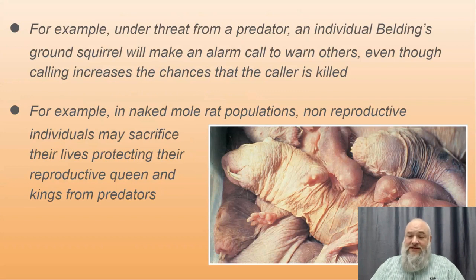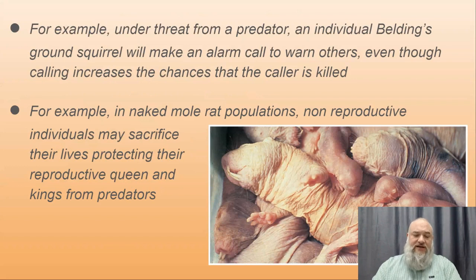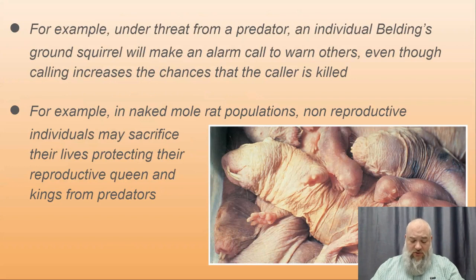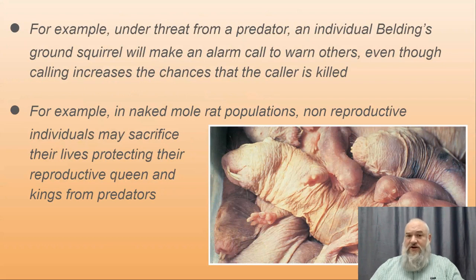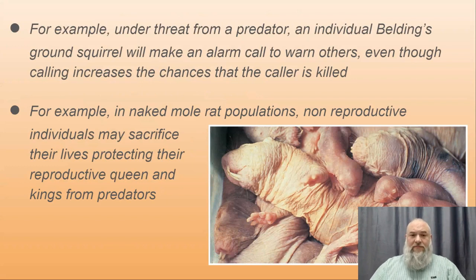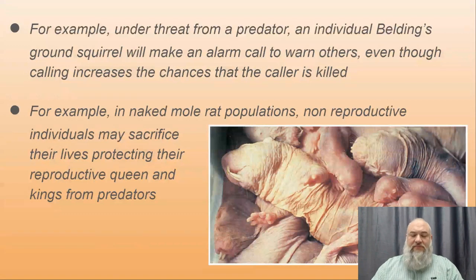Naked mole rats have a queen and a couple of kings; the other non-reproducing individuals may sacrifice their lives protecting the reproductive members from predators. Similarly, worker bees sacrifice themselves to save the hive — once they sting, they lose their stinger and die. The evolutionary implications of this can be explained by inclusive fitness.